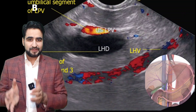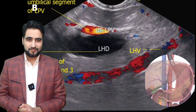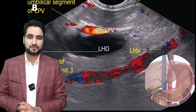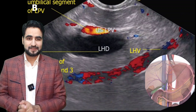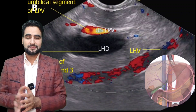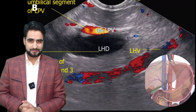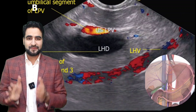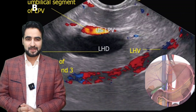Because of this orientation, the left portal vein appears closer to the probe than the left hepatic duct, even though anatomically it lies posterior to it.